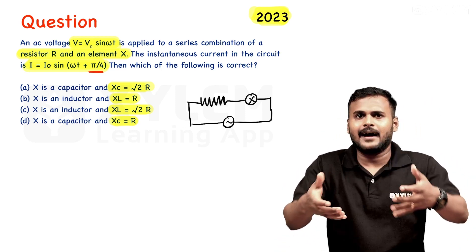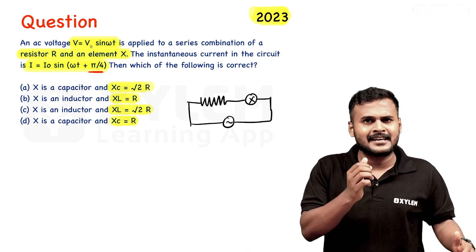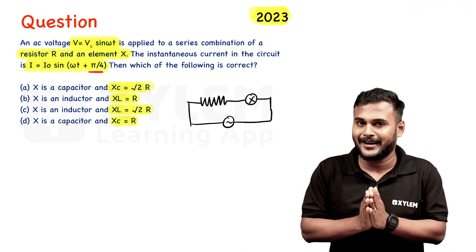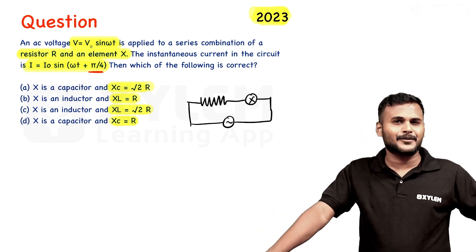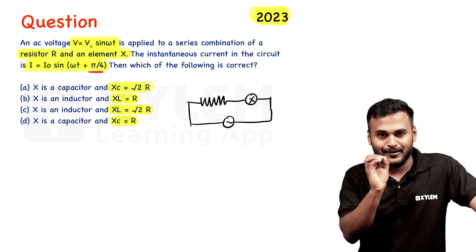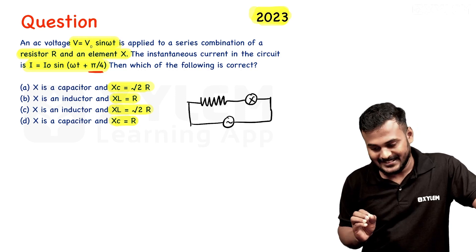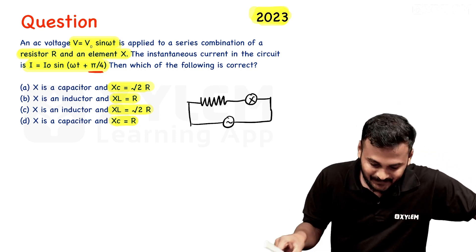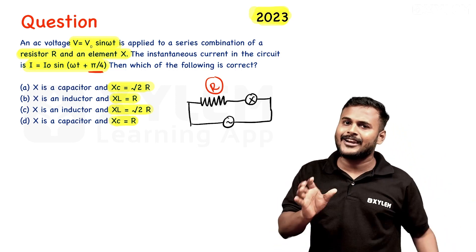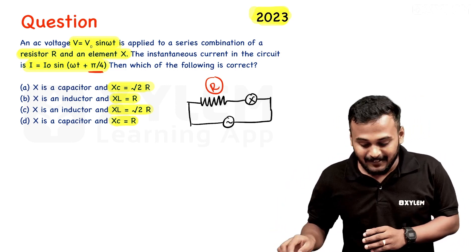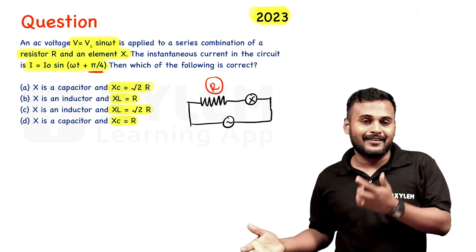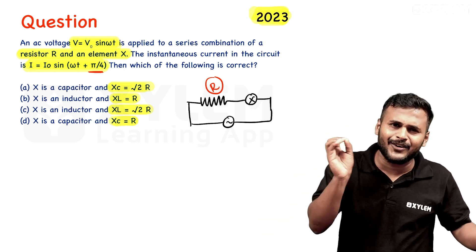First of all, we need to determine whether the element is a capacitor or inductor — that is the most important thing. This is the resistor, and this is element X. The phase is plus π/4, meaning voltage leads the current. So the element X is a capacitor.